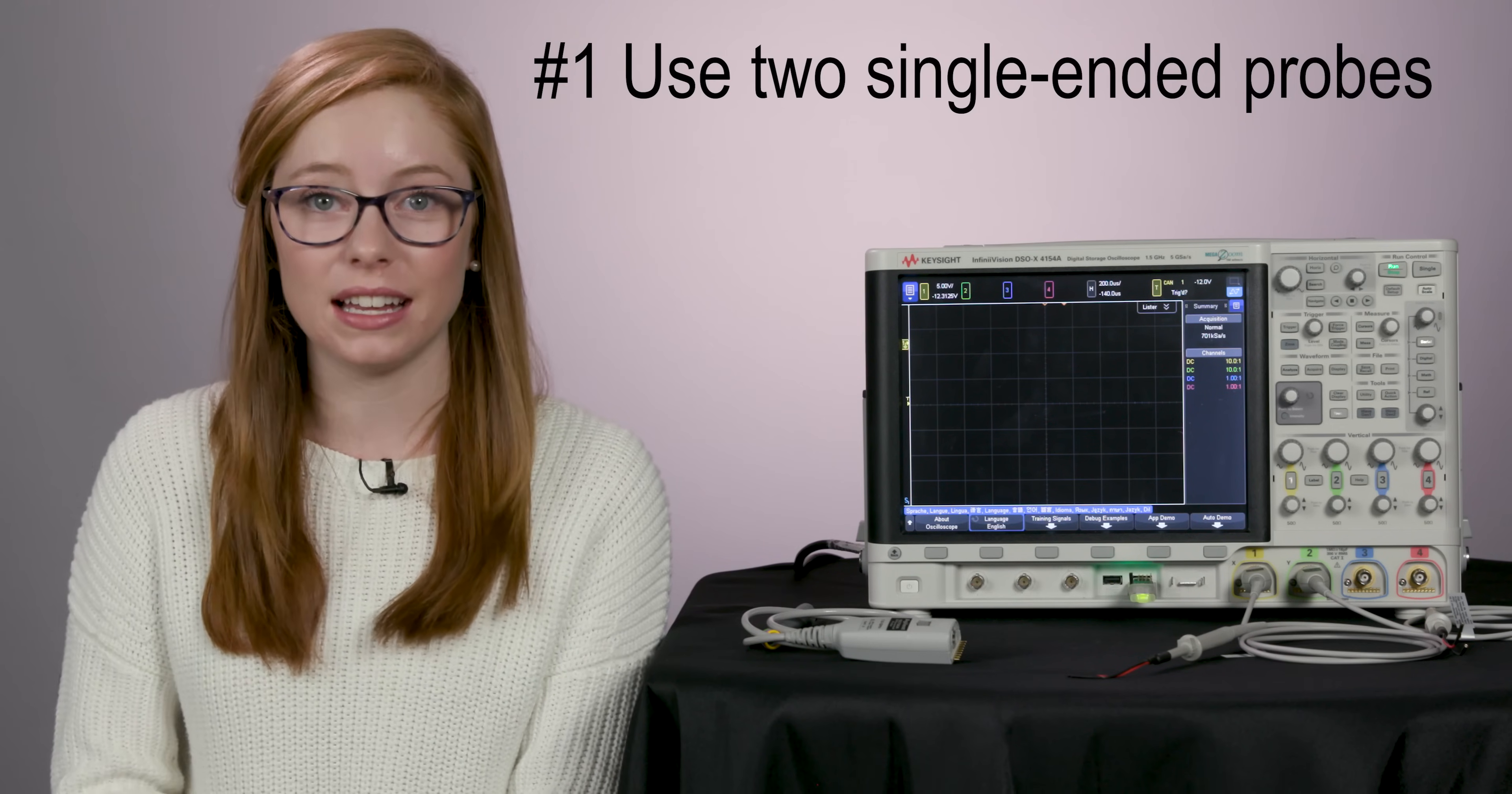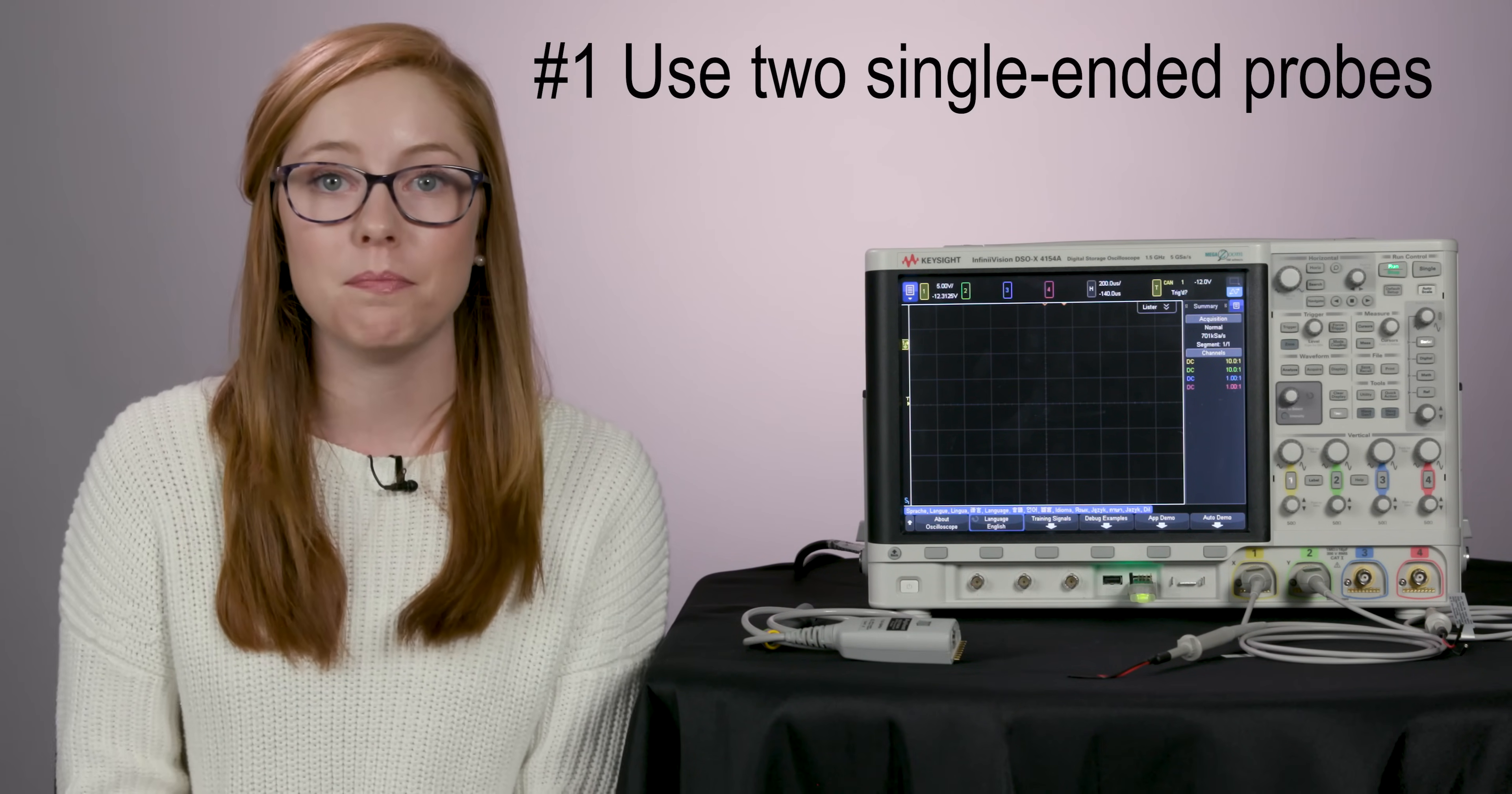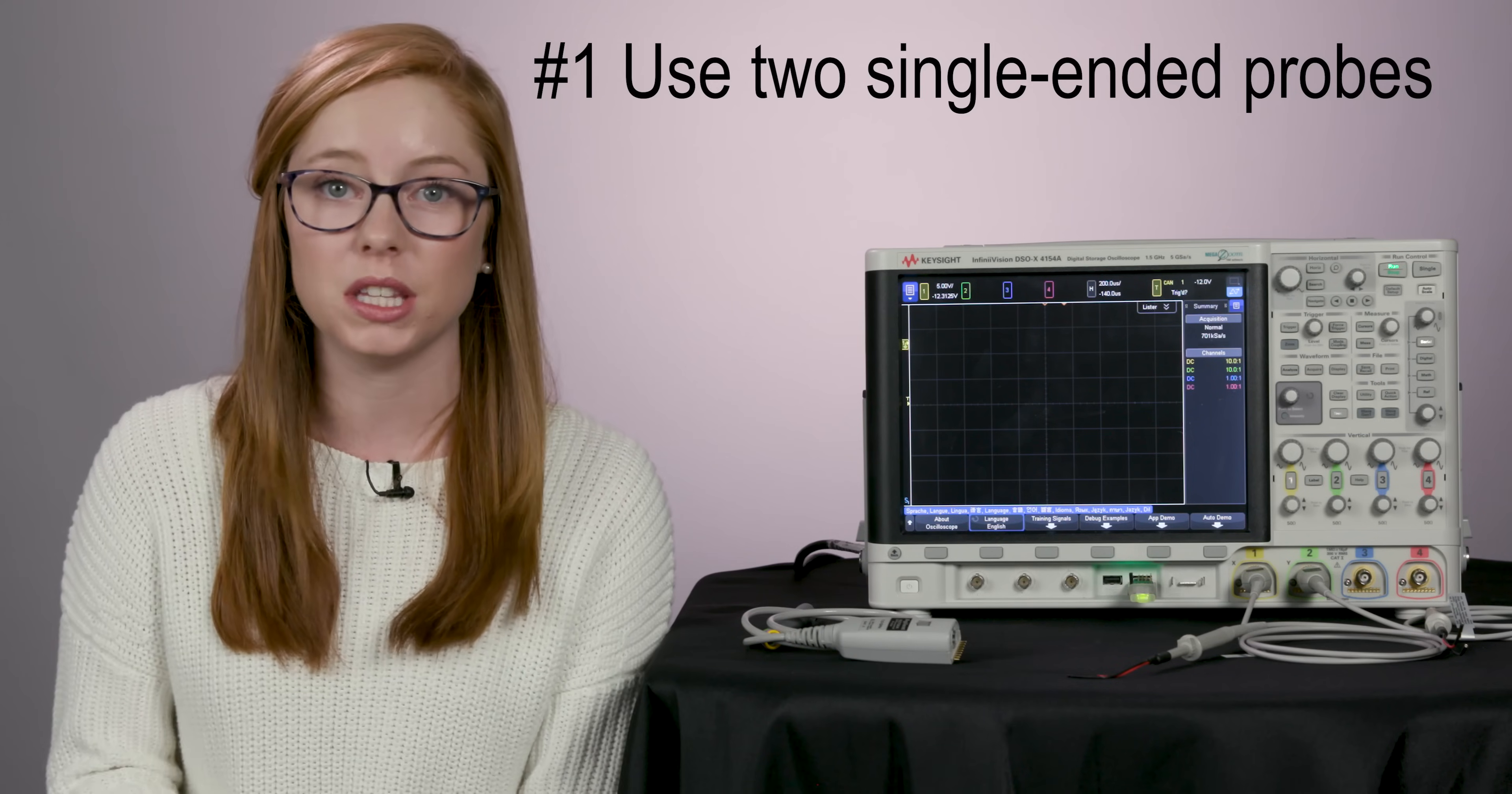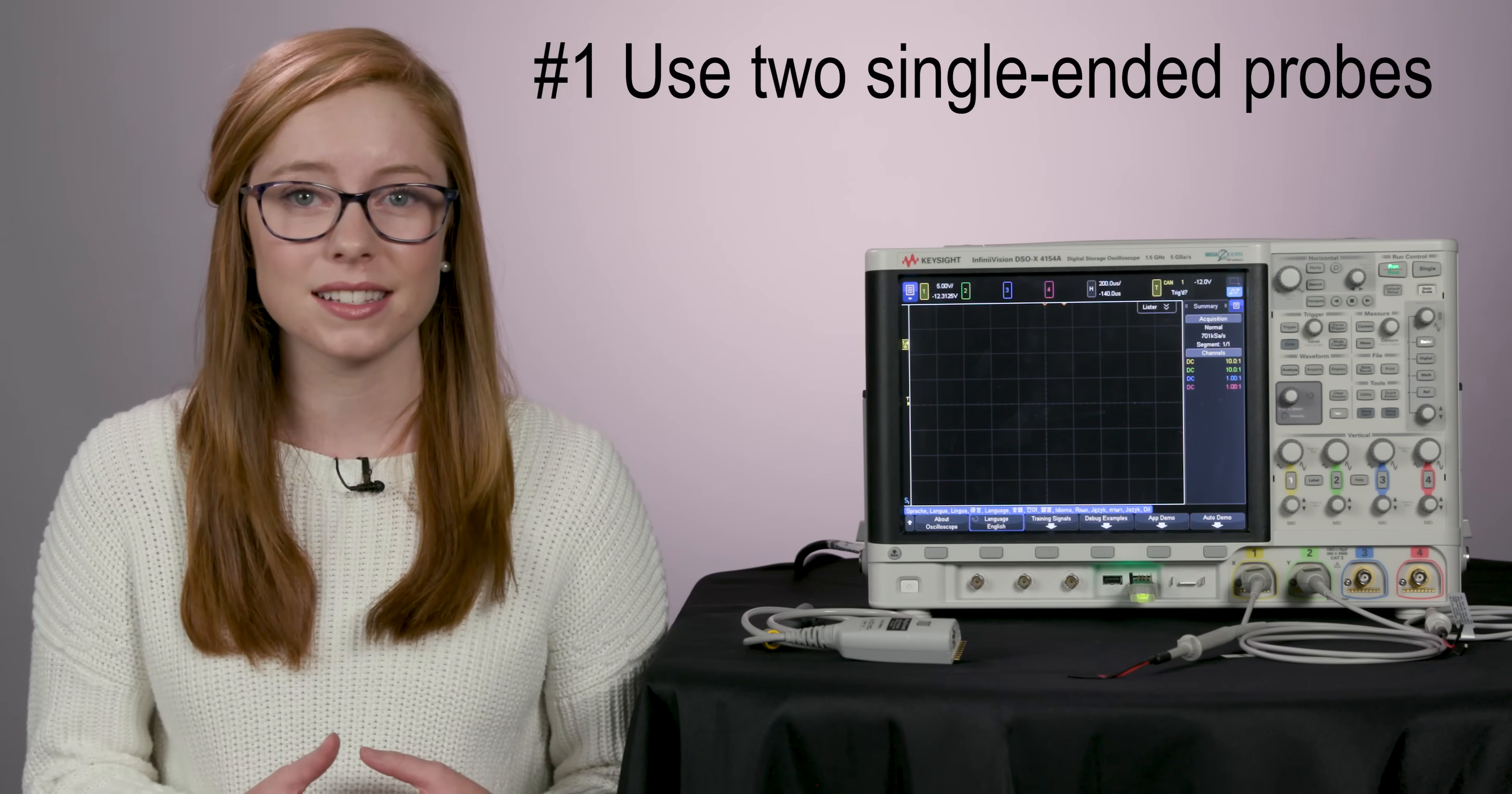So then how do you make a differential measurement with a scope? There's two options. One, you can use two single-ended probes, ground both of them, and then use your oscilloscope's built-in math function to find the difference between the two signals. This is the old-school method. It works in a pinch, but you lose accuracy.